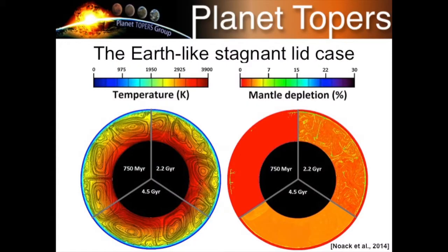Looking at a simple Earth-like case — one Earth size and mass, ignoring plate tectonics and assuming a stagnant lid — we see the evolution of temperature and mantle depletion over time. Higher depletion means more melting and more outgassing occurred. Depletion occurs in the uppermost part of the mantle beneath the stagnant lid; material goes outwards, and via convection the depleted material is mixed downwards, resulting in a homogeneously mixed mantle underneath a non-depleted lithosphere.